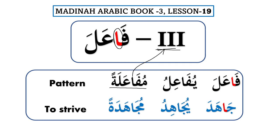What is common between Forms 2, 3, and 4 is that the مضارع always starts with ضمة (يُ). For example: فعّل يُفعّل, فاعل يُفاعل, أفعل يُفعل — in all three the مضارع starts with يُ. For the rest of the أبواب, the مضارع starts with فتحة, but for Forms 2, 3, and 4 it starts with ضمة.